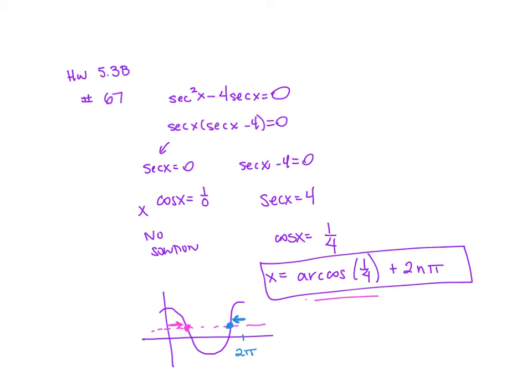If you think about it, you're going to subtract the arc cosine of one-fourth from the 2 pi, then it would get you the other values that we need.